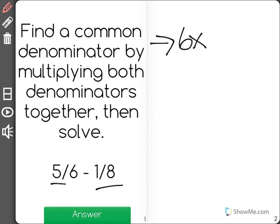It says to find a common denominator by multiplying them. So I have 6 times 8 will equal 48. So I know my common denominator will be 48.